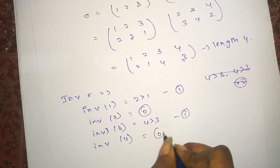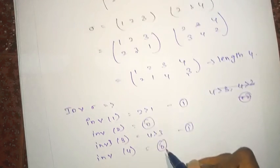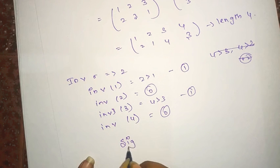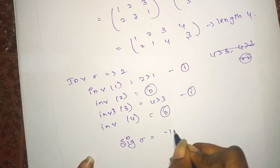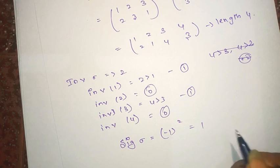So inversion of Sigma is 1 plus 0 plus 1 plus 0, which is 2. We can calculate the signature of Sigma, which is minus 1 to the whole power inversion of Sigma, which is 2. This equals 1.